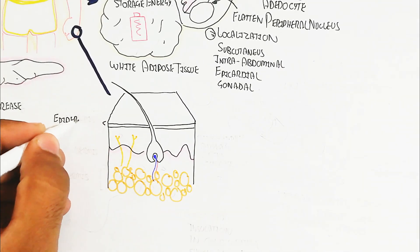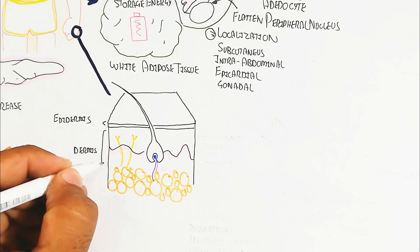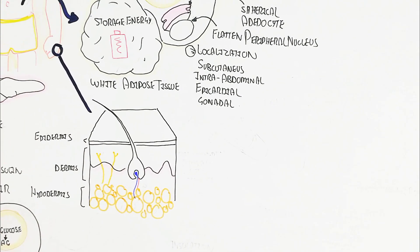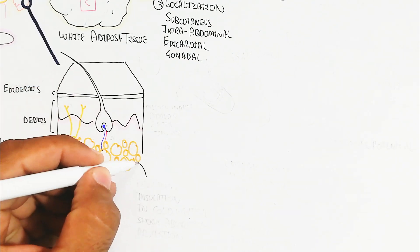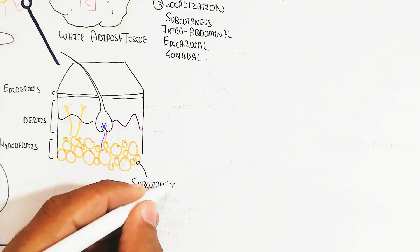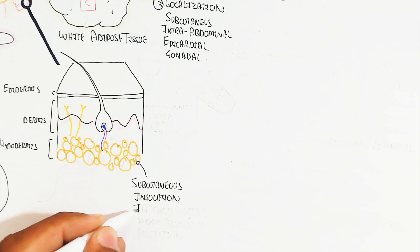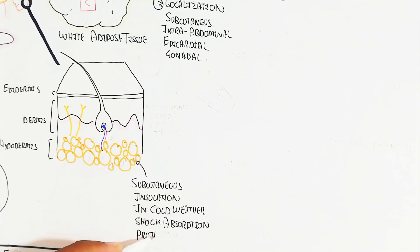The skin contains epidermis, dermis, hypodermis. Hypodermis is subcutaneous, will contain adipose tissue. Which is important and their function is insulation in cold weather, shock absorption, and protection against light.